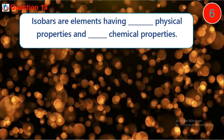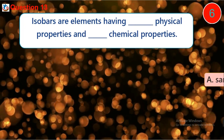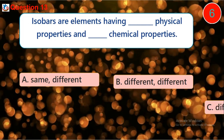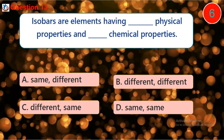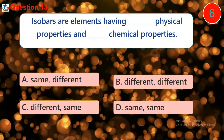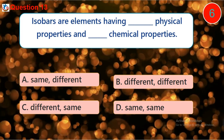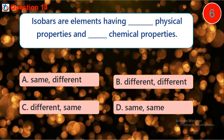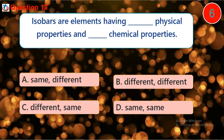Question thirteen: isobars are elements having dash physical properties and dash chemical properties. A. same, different, B. different, different, C. different, same, D. same, same.